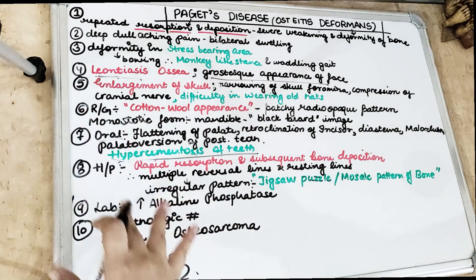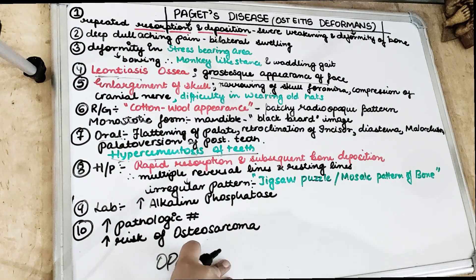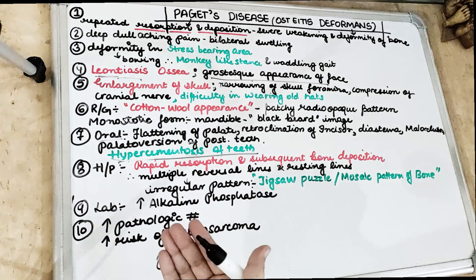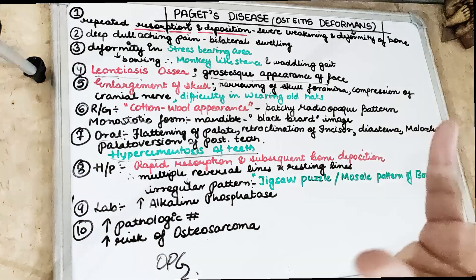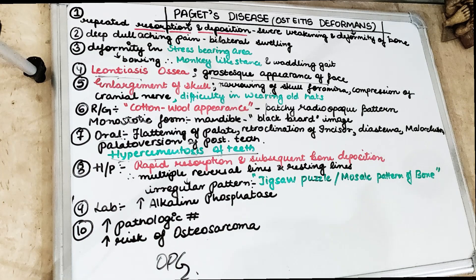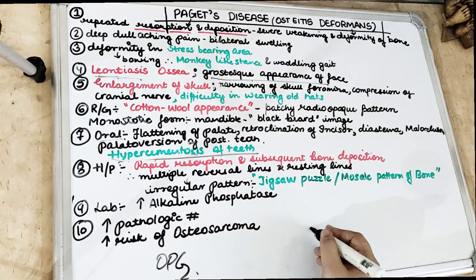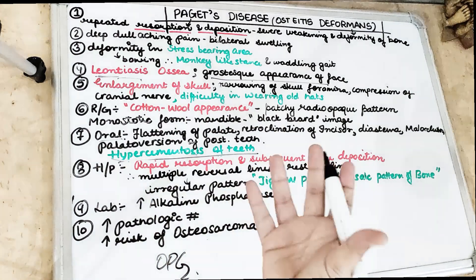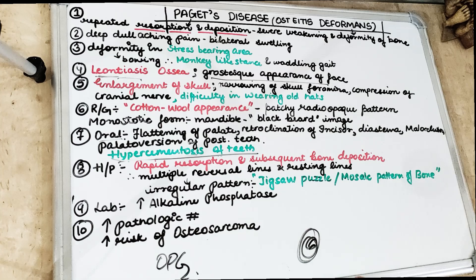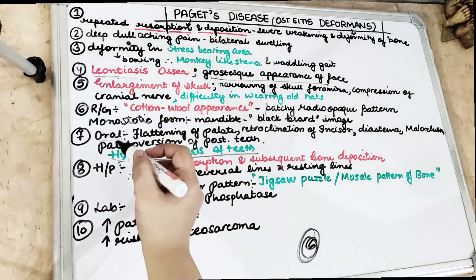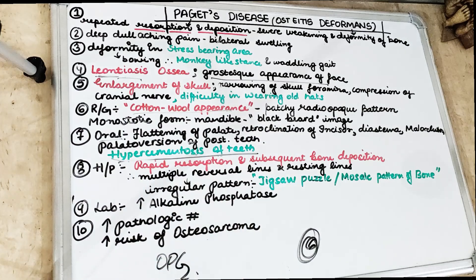Radiographically, because there is resorption and deposition going on due to the remodeling process, there are patches of radio-opaque areas. When new bone is forming, new patches appear and the bone looks like the cotton wool appearance — similar to the wool of cotton — with patches of radio-opacities present in the bone. That is why we see the cotton wool appearance radiographically.